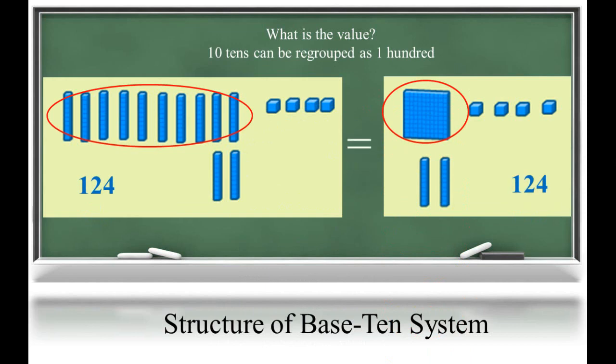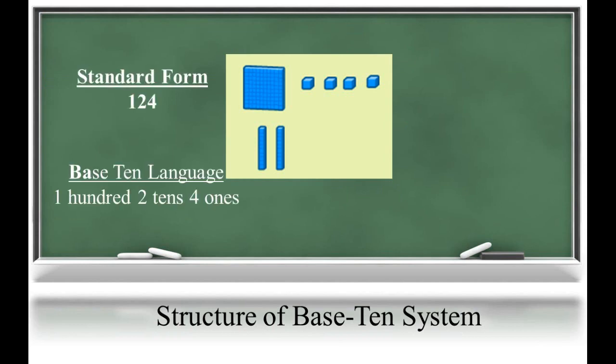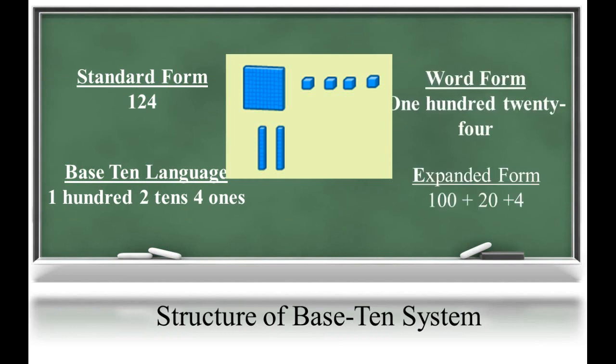In the previous unit, students learn multiple ways to record the value of a two-digit number. This knowledge will then be applied in the context of three-digit numbers. So, given the following manipulatives, a student will be able to identify the value in standard form, base 10 language, word form, and expanded form.